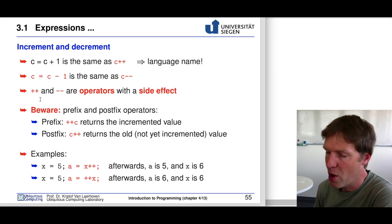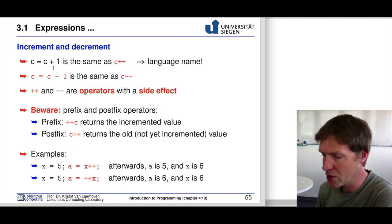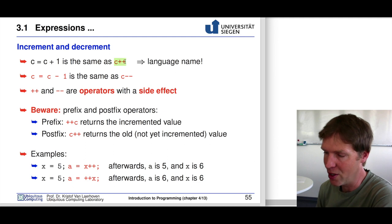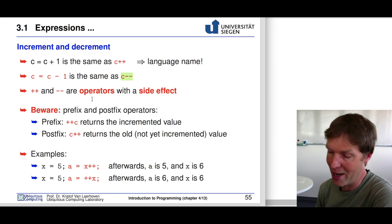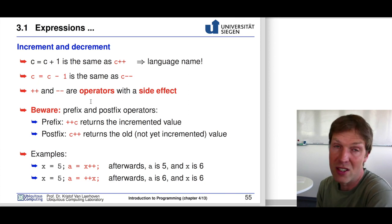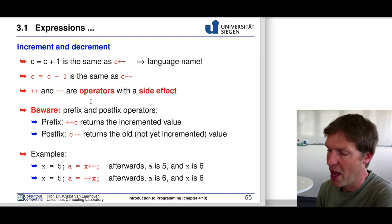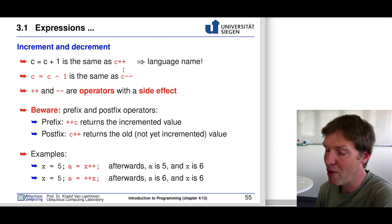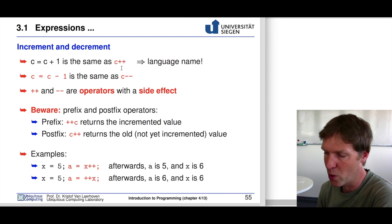We can also do this with one variable. If you do c equals c plus 1, you could write c plus equals 1. But for incrementing by 1 or decrementing by 1, you can make it even shorter: c++ for the plus 1 case, and c-- for the minus 1 case. These are called operators with a side effect because they change the value of the variable being worked on.